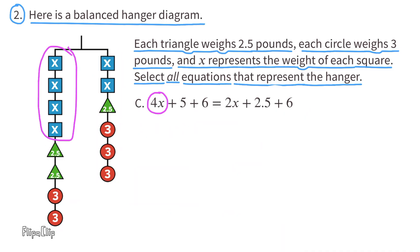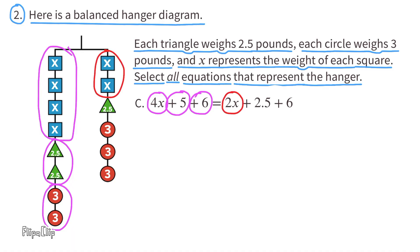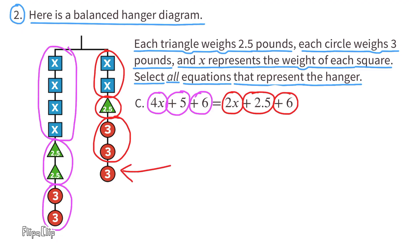Equation C: Here we have 4x + 5 + 6 on the left. On the right side of the equal sign we have 2x, which matches the hanger, plus 2.5 for the triangle, and then plus 6. But on the hanger, the right side shows 9, meaning there's an extra circle worth 3. So this equation does not match the hanger.